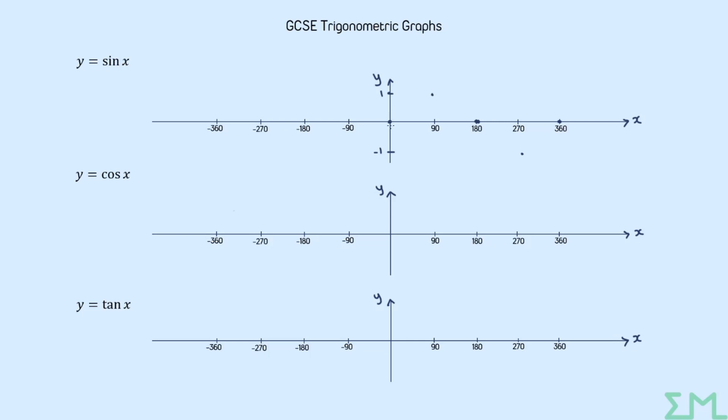So we start from (0,0) and we're going to go up to (90,1), down to (180,0) and then back up to (360,0). So we've got this nice wave shape with the sine graph.